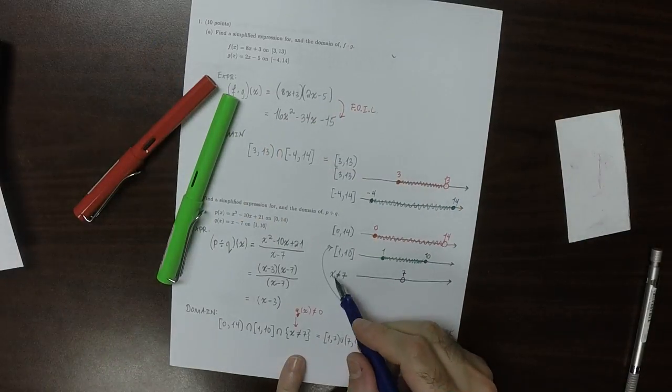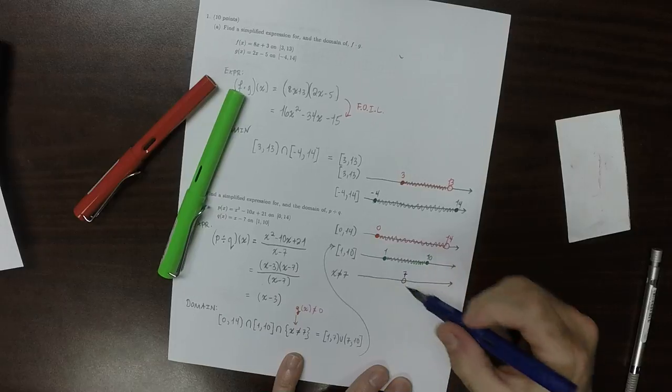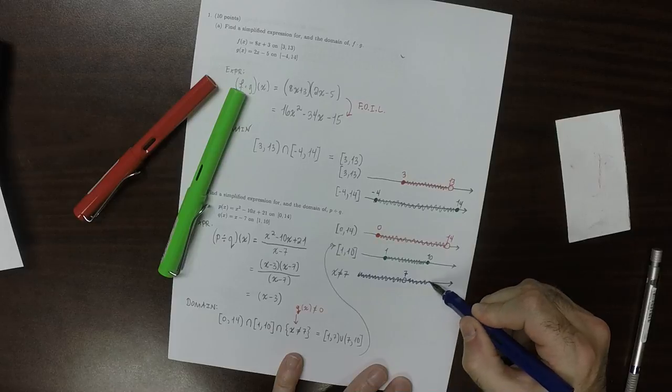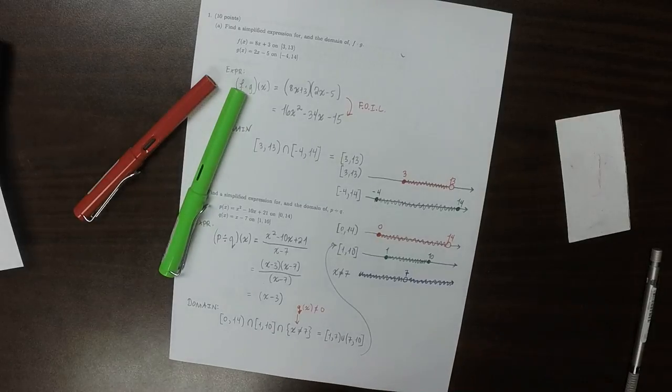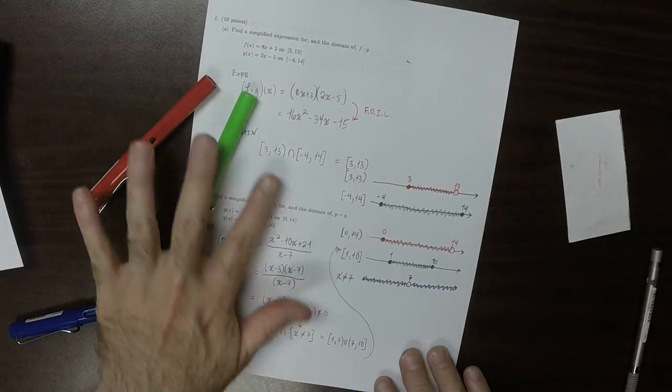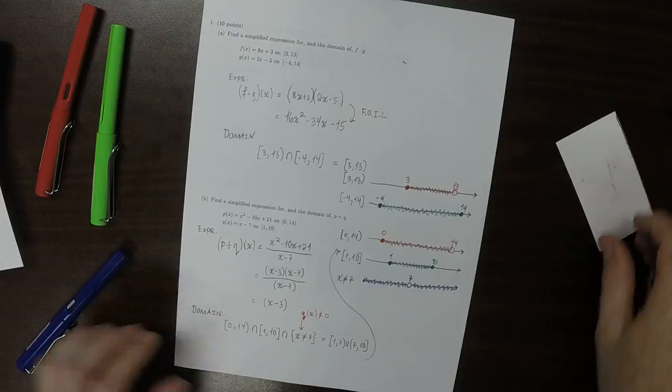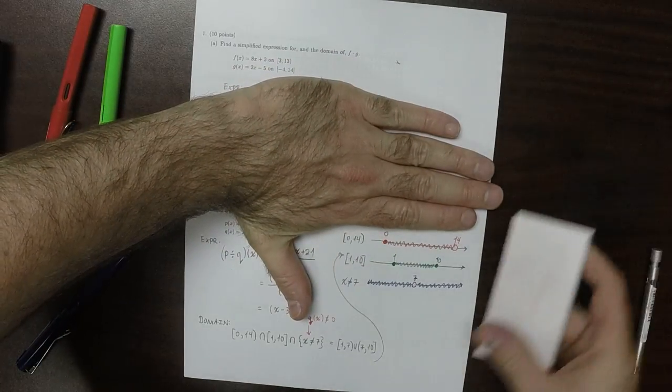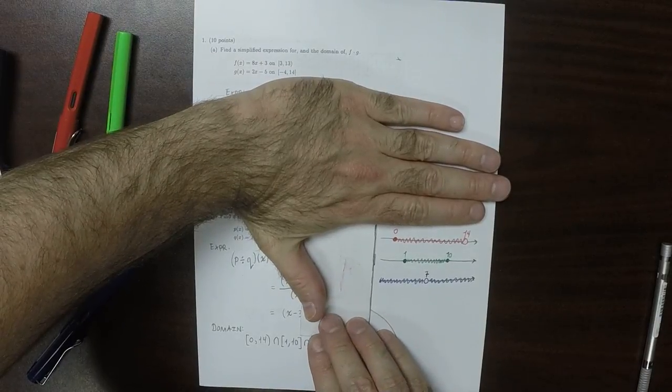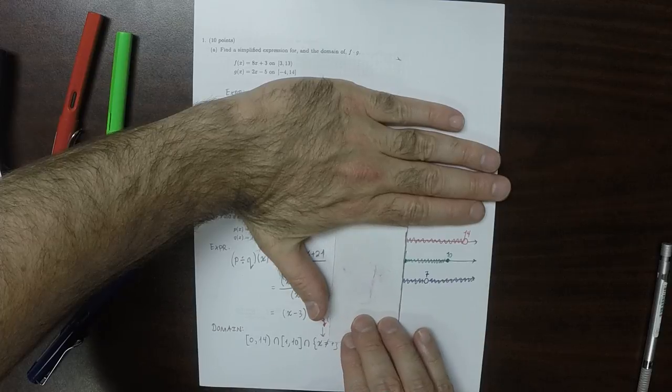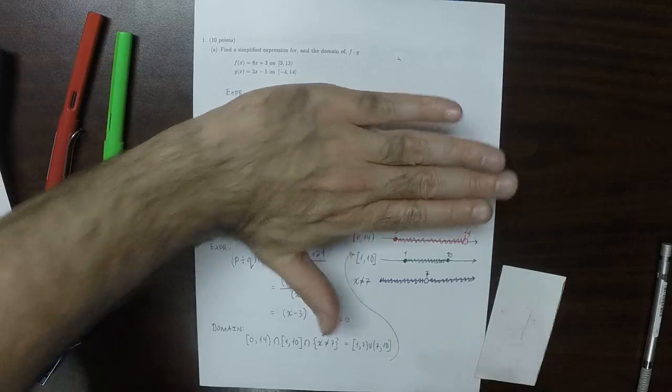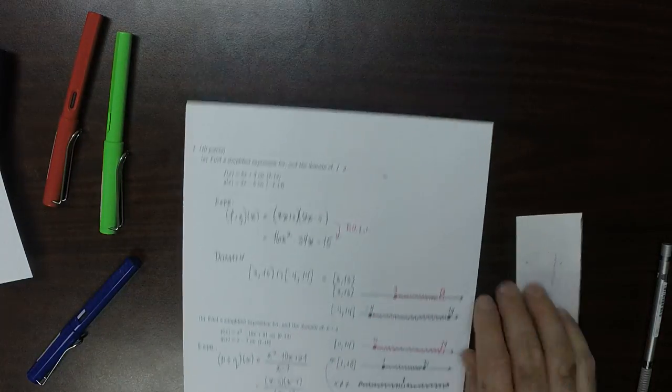So now, since it says anything but 7, that means we have all of this, except 7 of course. So the question is, for these three, where do we have red and blue and green? Well, starting at 1, we lose 7, and then from 7 to 10. And that's the answer to question 1.